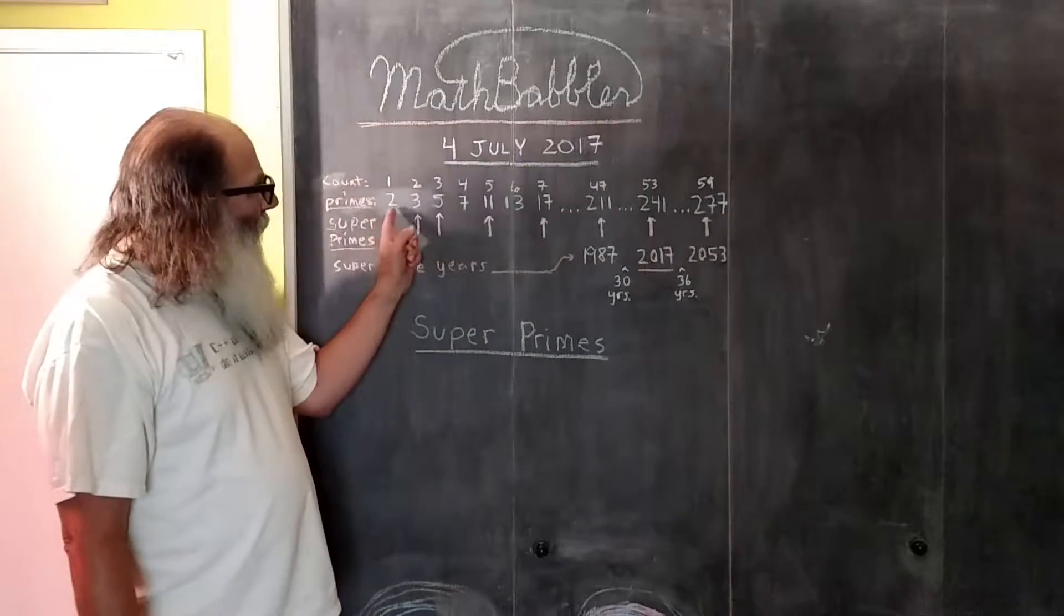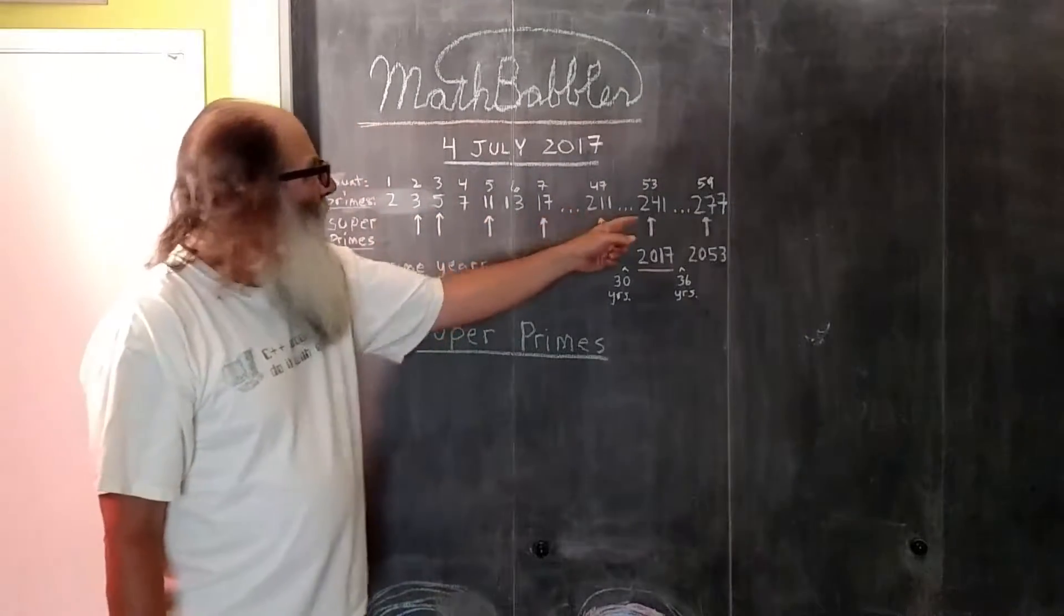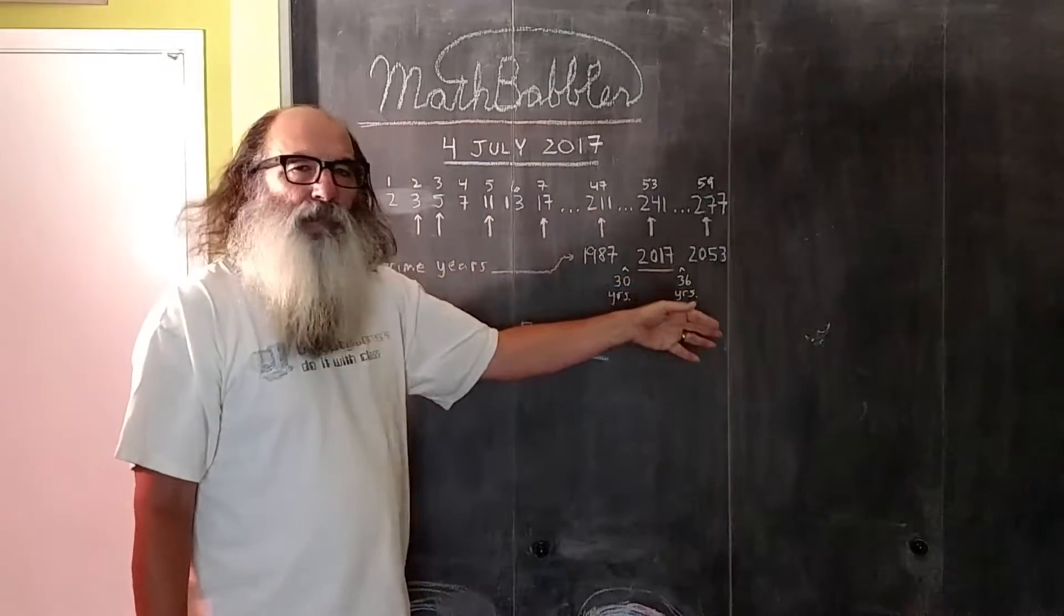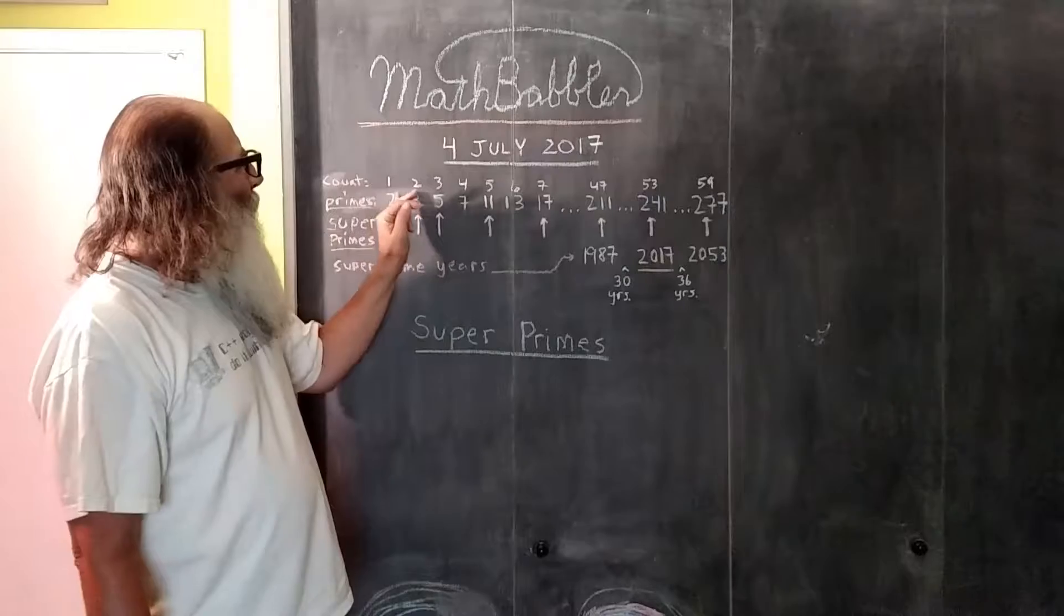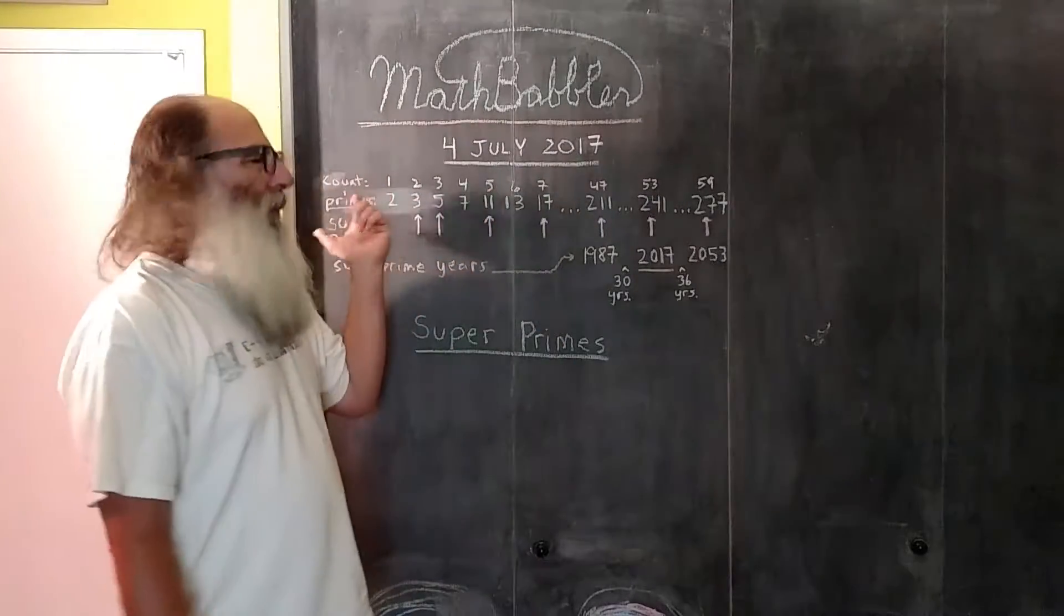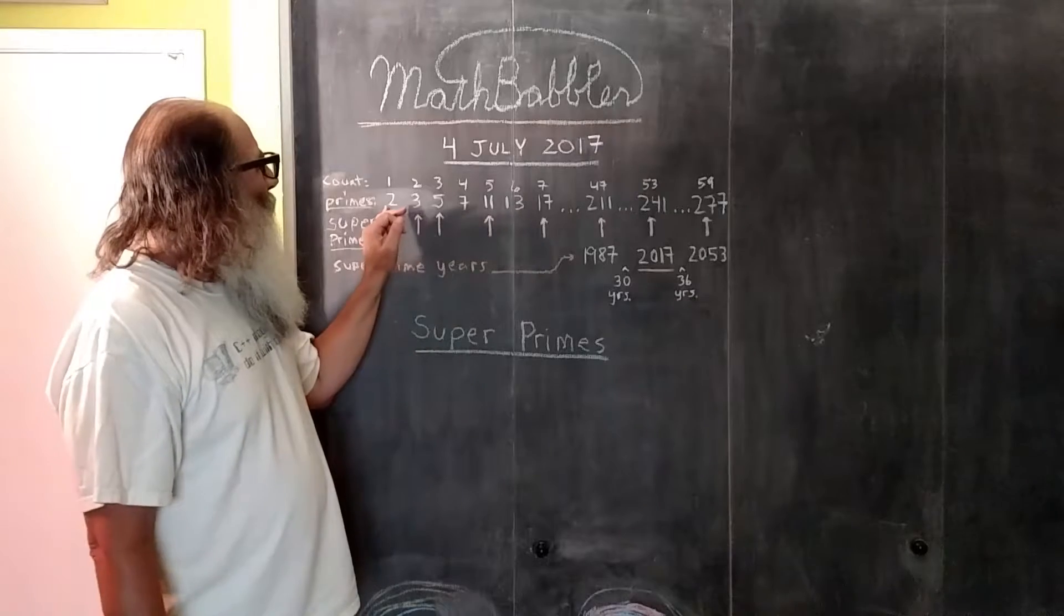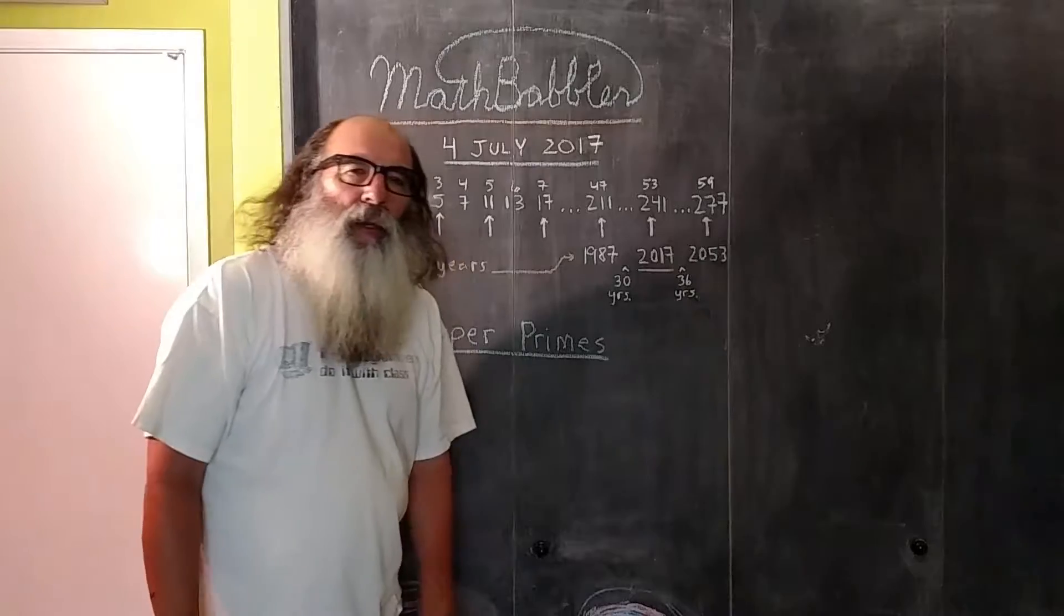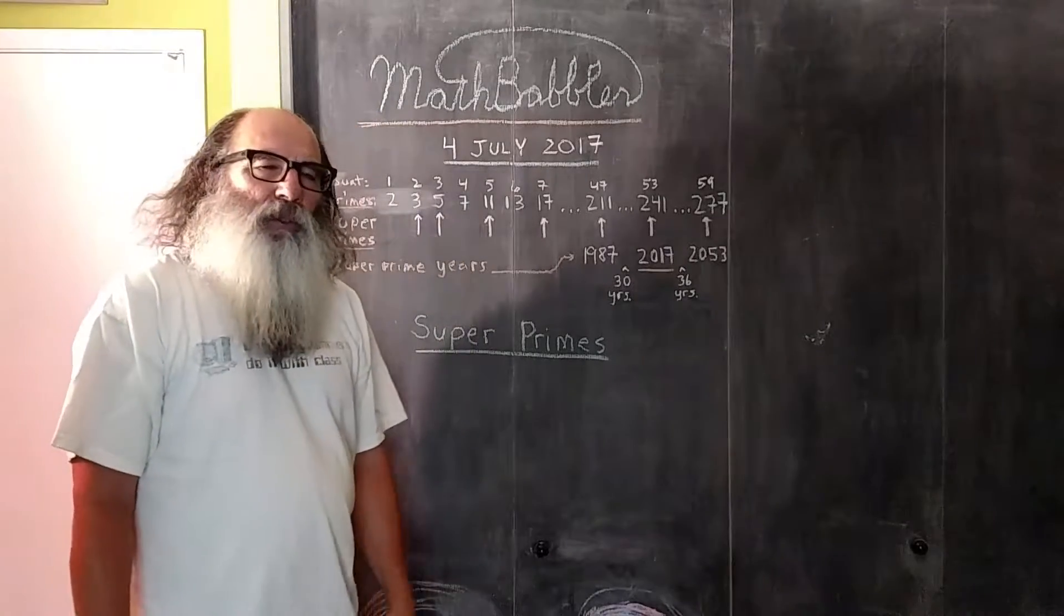Well, we have this sequence of prime numbers here: 2, 3, 5, 7, 11, 13, 17, and so on. Each prime number has a location in the sequence. I call it a count. So for example, 2 is the first prime number, 3 is the second prime number, and so on.